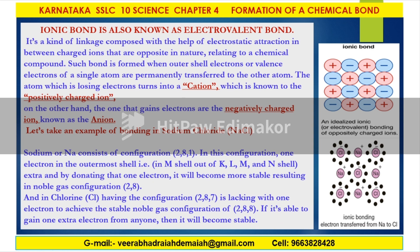Such a compound is formed when the outer shell electrons or valence electrons of a single atom are permanently transferred to another atom. The atom losing electrons turns into a cation — the positively charged ion. Similarly, the atom gaining electrons forms the negatively charged ion, known as the anion. For example, sodium Na has the configuration 2.8.1, with one electron in the outermost M-shell. By donating or transferring one electron, it becomes more stable, resulting in the noble gas configuration — also called S2P6 or octet configuration. Chlorine, having configuration 2.8.7, lacks one electron to achieve the stable noble gas configuration of 2.8.8.